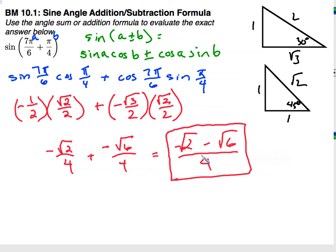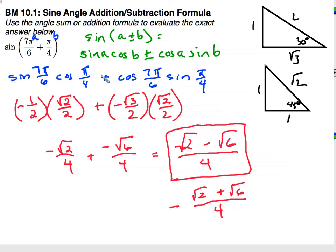An alternate answer might be written as negative(√2 + √6)/4. Since both terms are negative, we can factor out a negative and have negative(√2 + √6) all over 4 — one fraction, and there's our answer. The only difference if this were a subtraction problem is the plus sign would change to a minus. And there you have it — thanks for tuning in, and we'll see you next time.